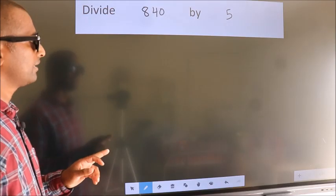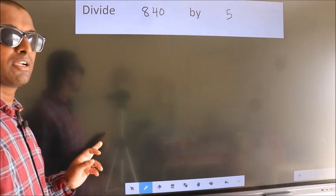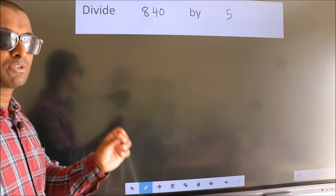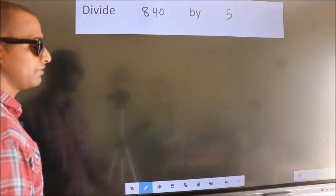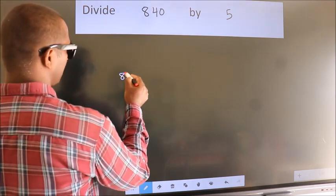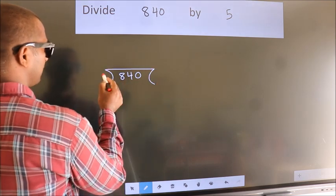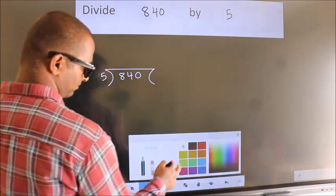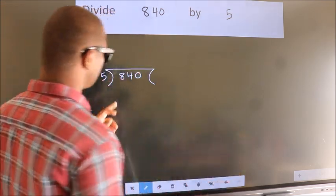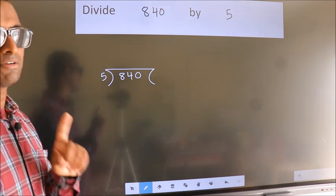Divide 840 by 5. To do this division, we should frame it in this way. 840 here, 5 here. This is your step 1.